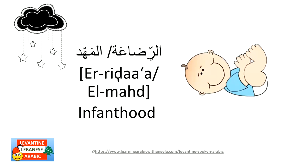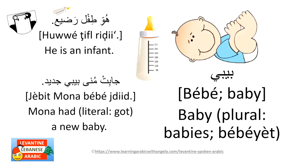The first stage: al-rida'ah or al-mahd — infanthood. Al-rida'ah refers to breastfeeding as well; al-mahd is a crib, so it also denotes infanthood. In Lebanese we commonly use the French or English word 'bebe,' and in the plural 'bebeyet.' We can say 'huwwe fil-rida'a,' meaning he is an infant — he's still breastfeeding.